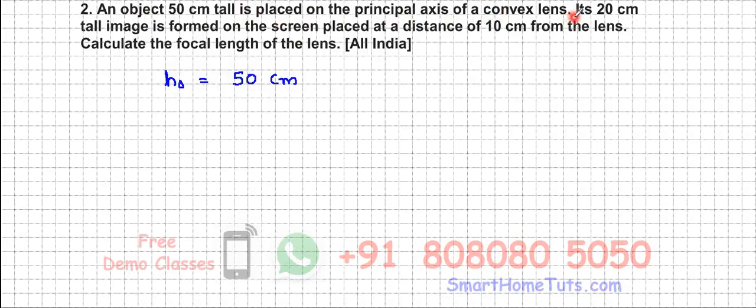It's placed on the principal axis of a convex lens. Its 20 centimeter tall image is found on the screen, so your height of the image h_i is 20 centimeters. Now the image is found on the screen, it means it's a real image.